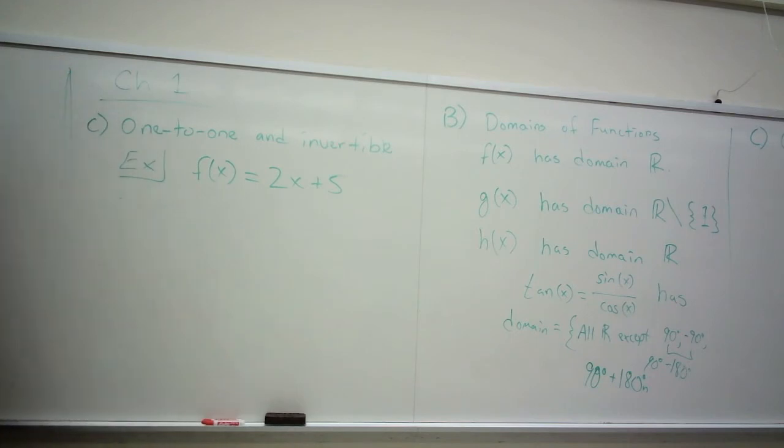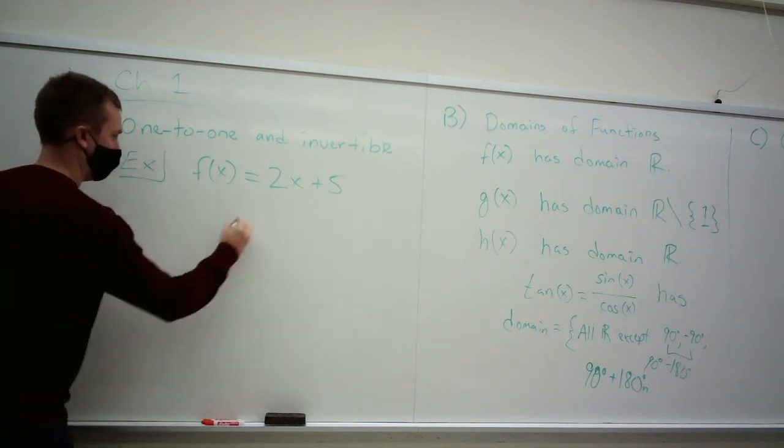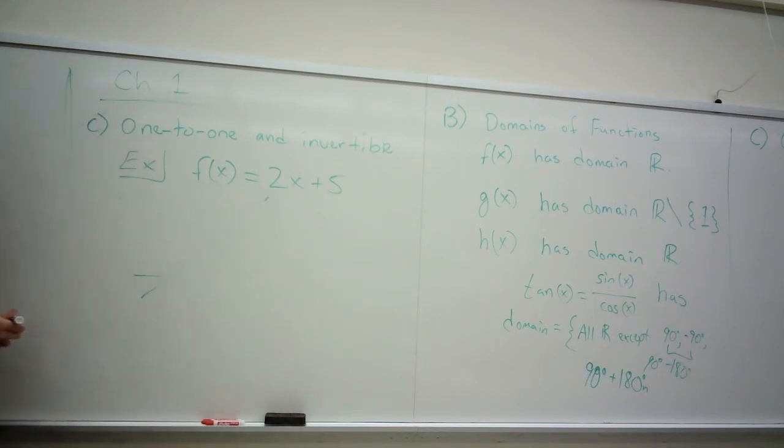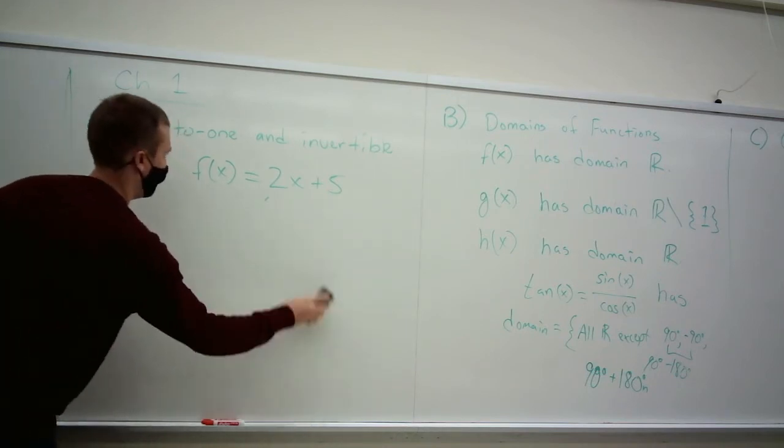I don't know, I'm making stuff up. 2x plus 5. That's a function. What kind of function is it? Linear, yes. Does it have an inverse which is a function? Yeah, it's got a slope of 2 so it comes up like this. No horizontal line I'm going to hit it twice, so it has an inverse function.